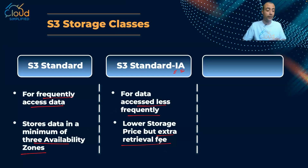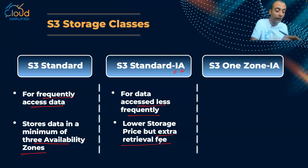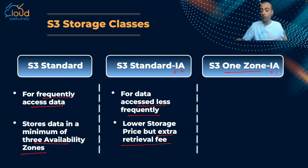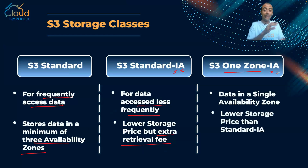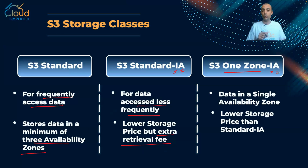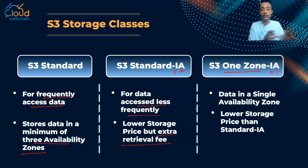The third type is a very critical one to understand — S3 One Zone Infrequently Accessed. One zone means data is stored in a single availability zone. This is definitely a lower-cost type of storage, but you need to be careful when using it, because if that single availability zone fails, you might lose your data. That's why it's important to understand the use case for One Zone-IA.